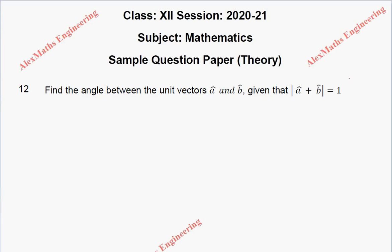Hi students, this is Alex here. Find the angle between the unit vectors a cap and b cap given that mod a cap plus b cap is equal to 1.